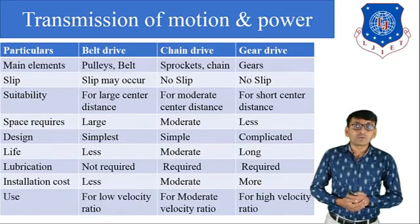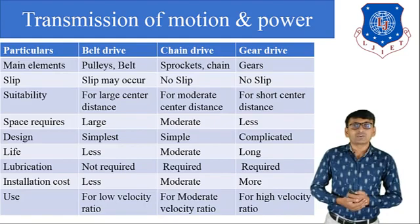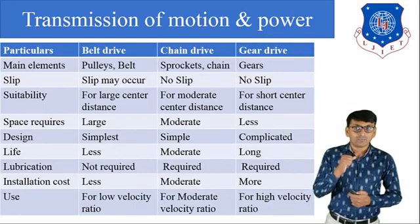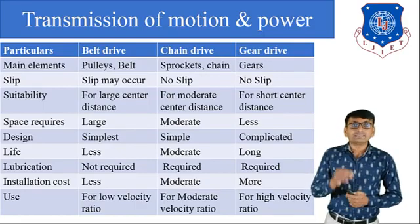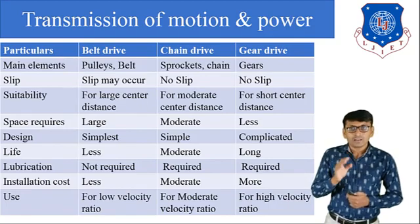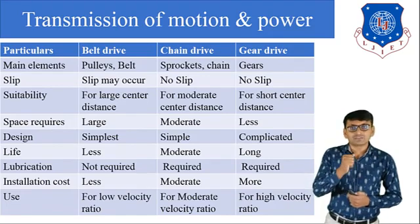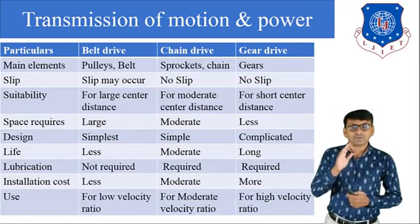Installation cost: belt drive has less installation cost, chain drive has moderate installation cost, and gear drive has more installation cost. Last — use: belt drive is used for low velocity ratio, chain drive is used for moderate velocity ratio, and gear drive is used for high velocity ratio.